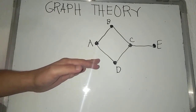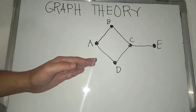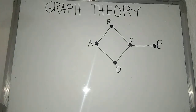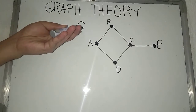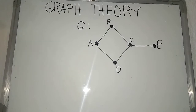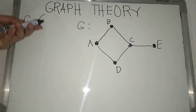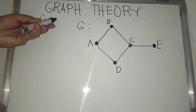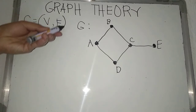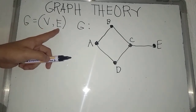So, this is an example of a graph. It consists of vertices and edges. Now, assuming we are going to call this graph as graph G. We specify graph G as the set of vertices, denoted as V, and the set of edges, denoted as E. So, this is the set of vertices, and we have here the set of edges.